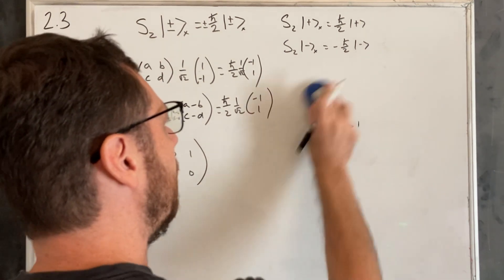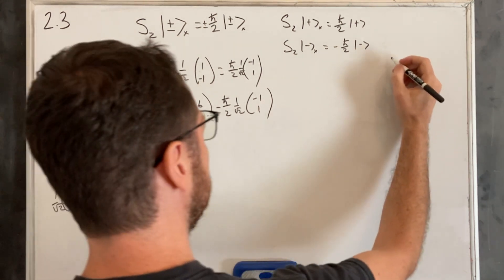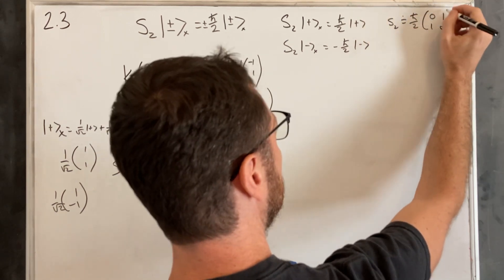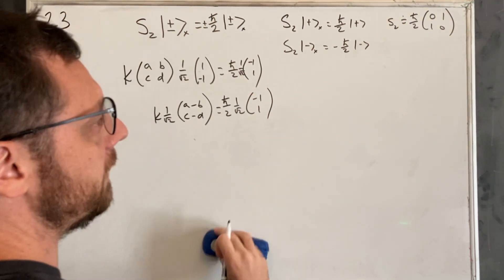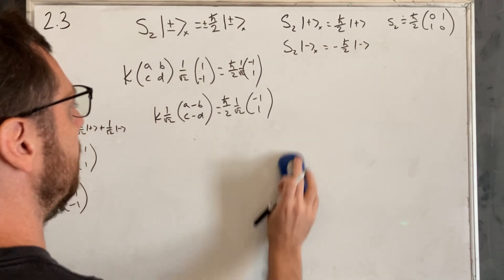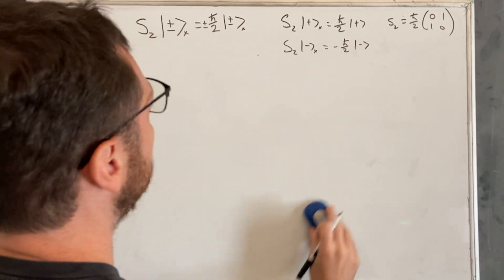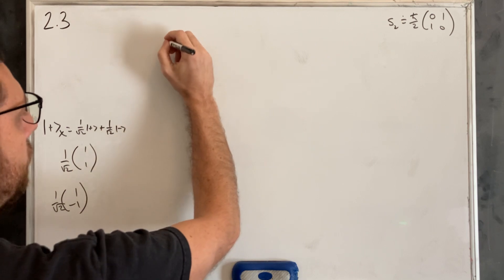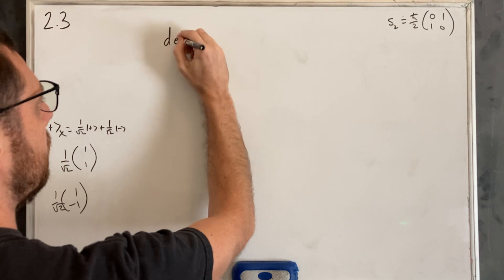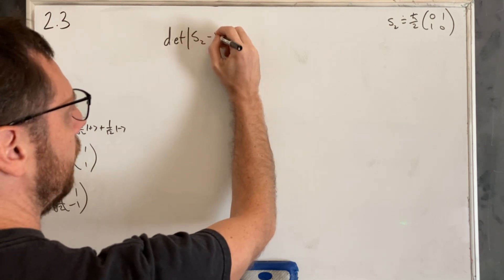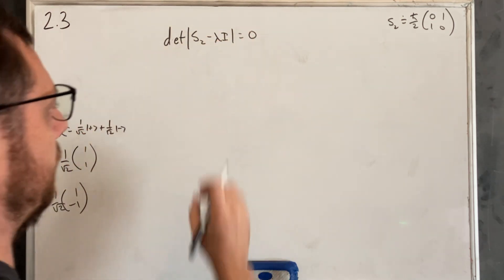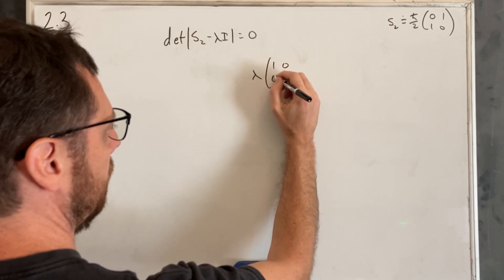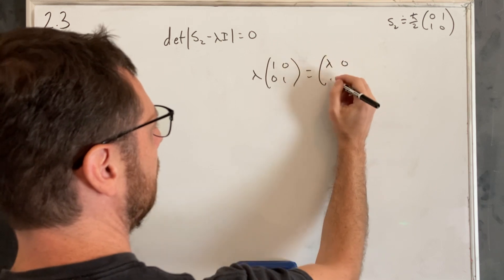Next, we need to find the eigenvalues and eigenvectors. S_z equals (ℏ/2)·[[0,1],[1,0]]. To find eigenvalues, we check that the determinant of (S_z − λI) equals zero. Writing the matrix with ℏ/2 inside, we get [[0, ℏ/2],[ℏ/2, 0]] minus [[λ,0],[0,λ]], giving [[−λ, ℏ/2],[ℏ/2, −λ]].